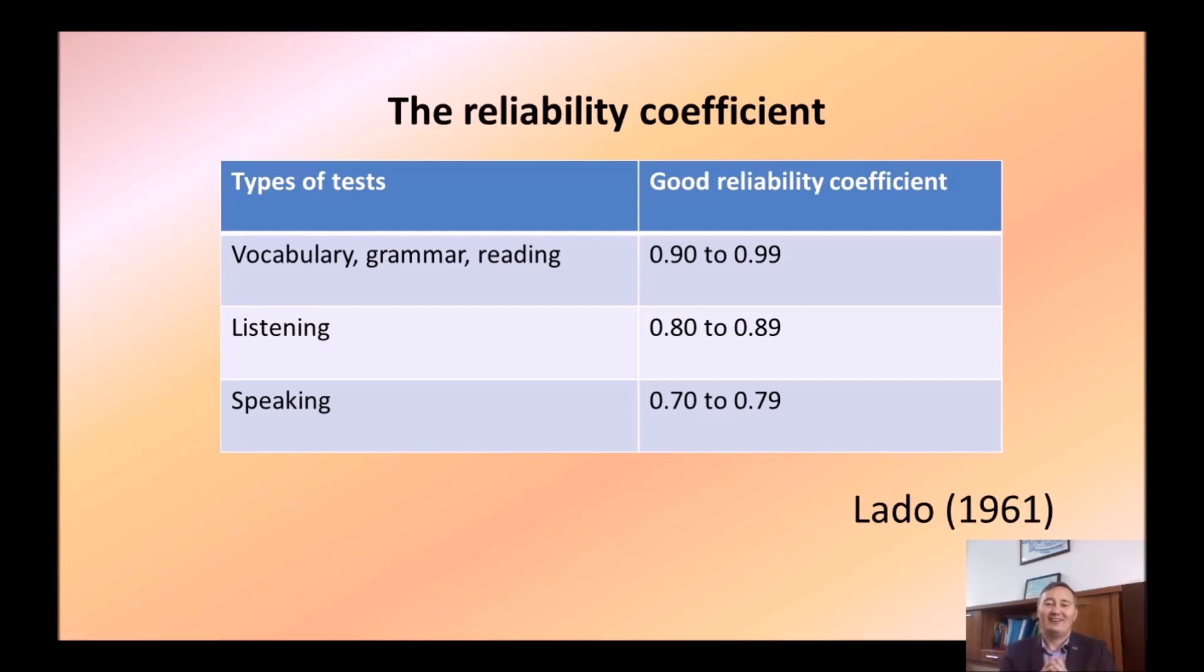You can pause the video and brainstorm. So, I'm pretty sure that most of you guessed the answer correctly. Speaking is a productive skill and if it is productive skill, it requires judgment of a scorer and when judgment is involved it is subjective. So, speaking test has the lowest reliability coefficient because of subjectivity in assessment. While vocabulary, grammar, and reading have very little subjectivity. They are mostly multiple choice, paraphrase, fill-in-the-gaps questions. This is why subjectivity is minimal.